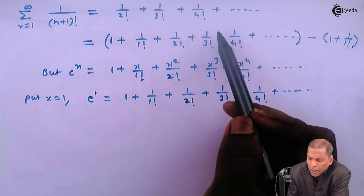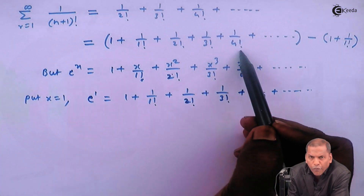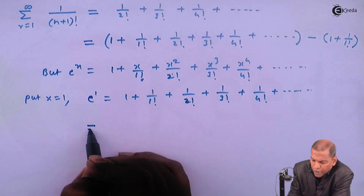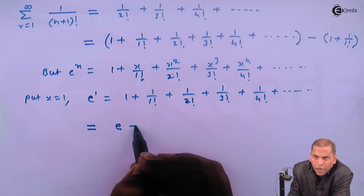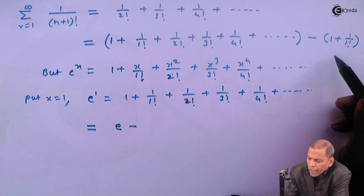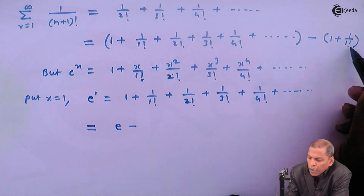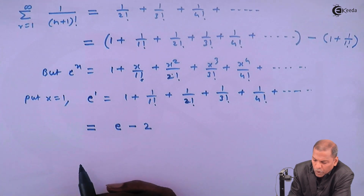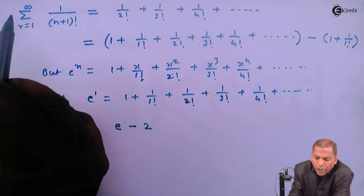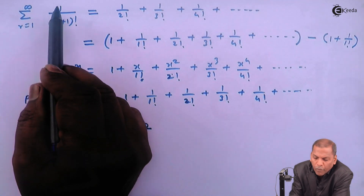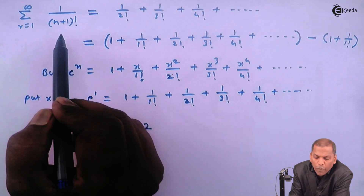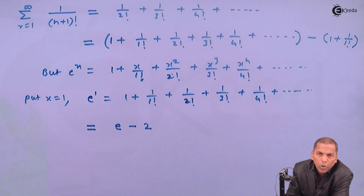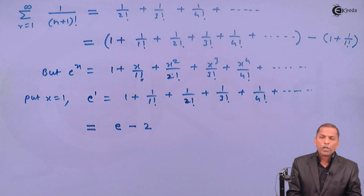So the first bracket simplifies to e, and the second bracket simplifies to one plus one, which equals two. Therefore, the summation from n equal to one to infinity of one upon (n plus one) factorial gives the answer e minus two. This is the required solution for the given problem.